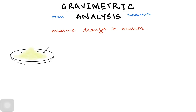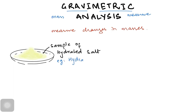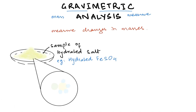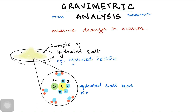Imagine you have a sample of hydrated salt — for example, hydrated iron(II) sulfate, which is green in color. We write it as FeSO4·XH2O. Hydrated means the crystals have their ions in the ionic lattice, but there are also water molecules attached to the ionic lattice.